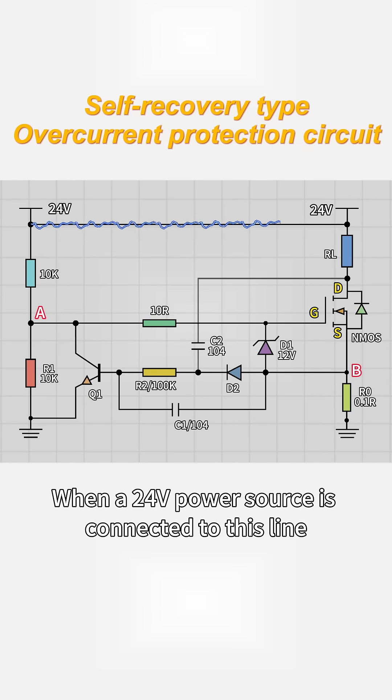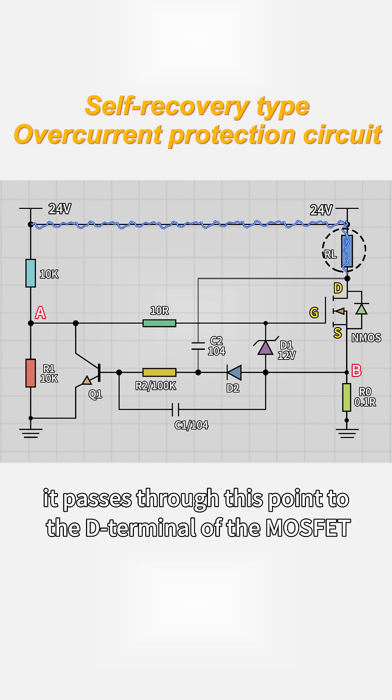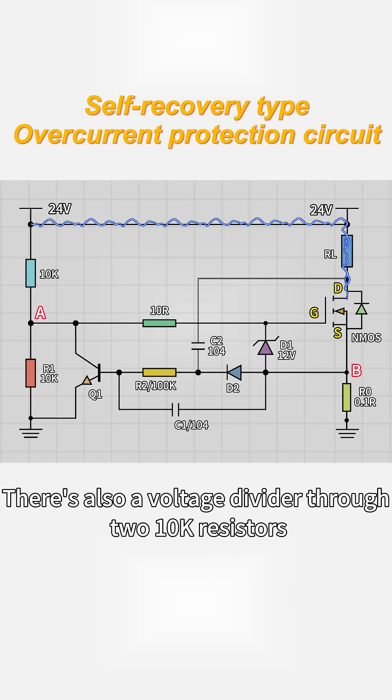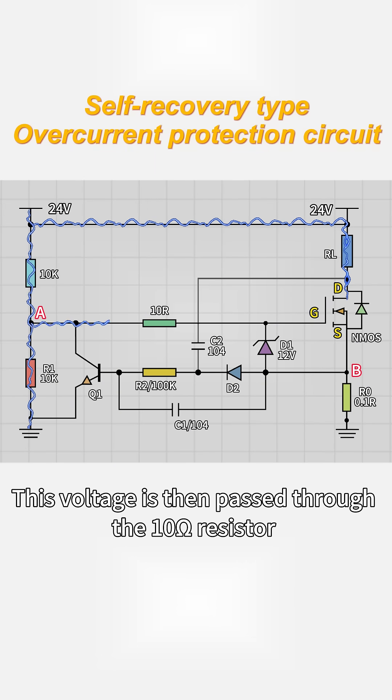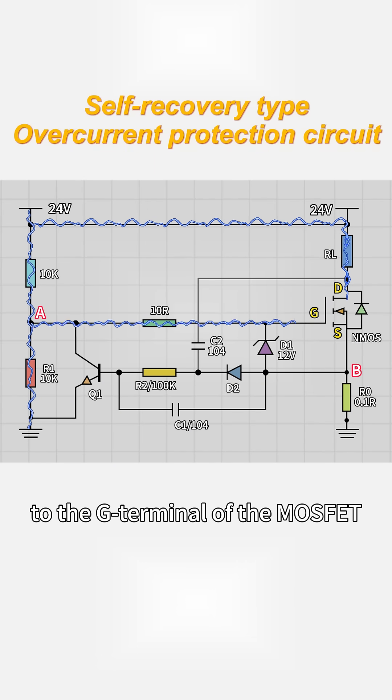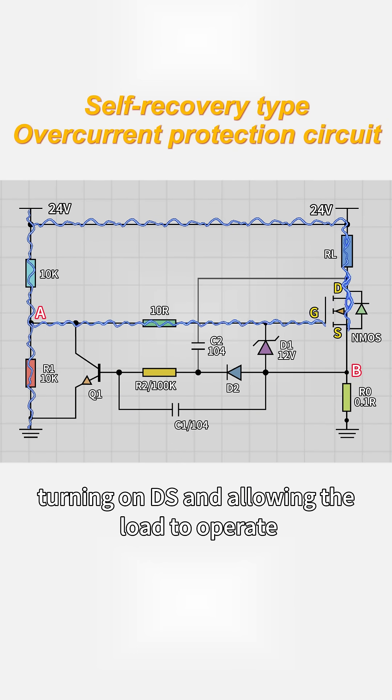When a 24V power source is connected to this line, it passes through this point to the D terminal of the MOSFET. There's also a voltage divider through two 10k resistors, generating a 12V voltage. This voltage is then passed through the 10 ohms resistor to the G terminal of the MOSFET, turning on DS and allowing the load to operate.